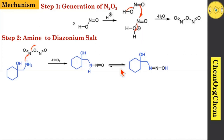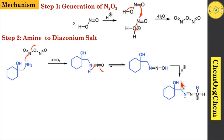This intermediate quickly tautomerizes to provide the corresponding oxime. Here you see how this happened: this electron migrated here, then followed by this electron picking up the H+ ions, which leads to generate this oxime intermediate. After the formation of the oxime intermediate, it is quickly protonated by the acid — you see the hydroxy group protonated by the acid — which produces this corresponding intermediate.